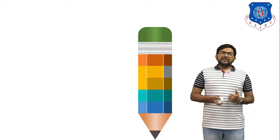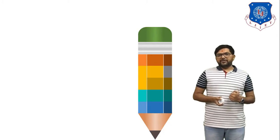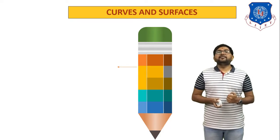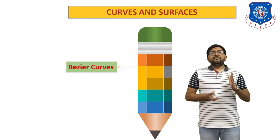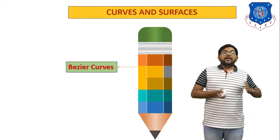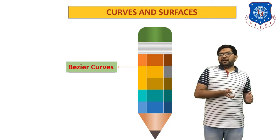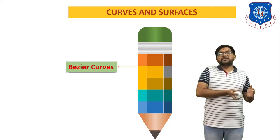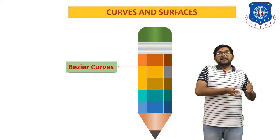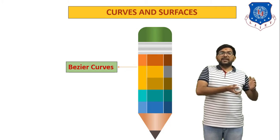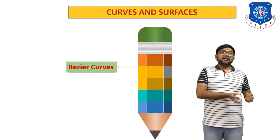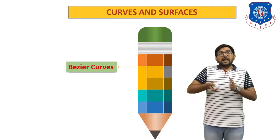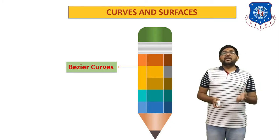In the last session we discussed parametric representation of ellipse and parabola. Up to now we have discussed only analytical curves. Analytical curves are curves that have their own equation — for example, a line has the equation y = mx + c. In today's session we start synthetic curves.